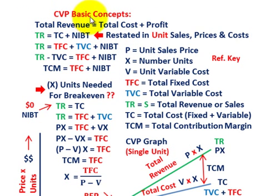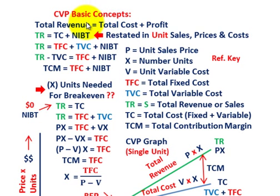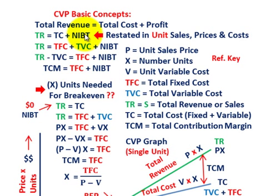The basic CVP concept is: total revenues equals total cost plus profit. In our case, we set profit equal to zero. So total revenues equals total cost, which is total fixed cost plus total variable cost, plus net income before taxes. Rearranging: total revenues minus total variable cost equals total fixed cost plus net income before taxes. That difference — total revenues minus total variable cost — equals our total contribution margin.